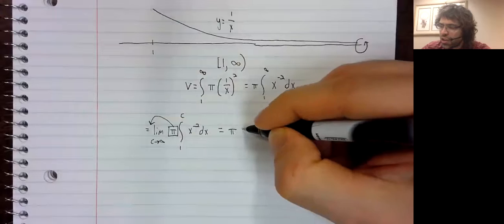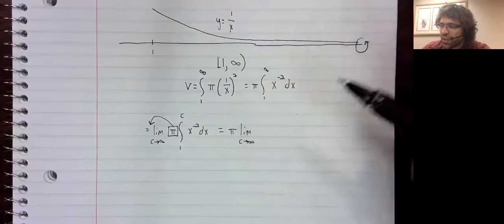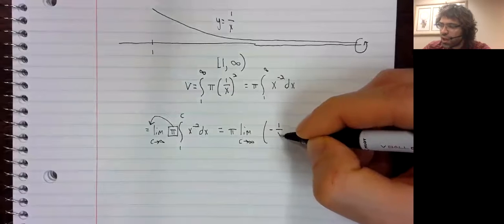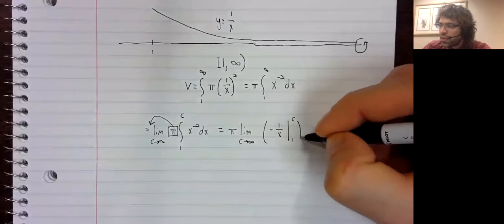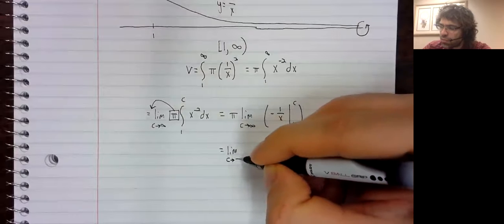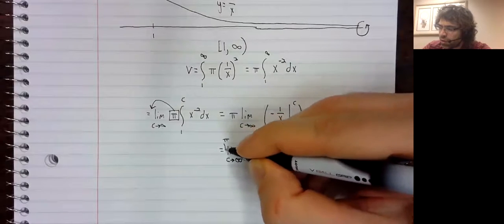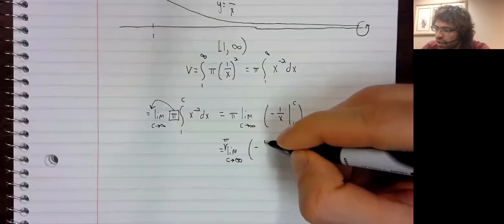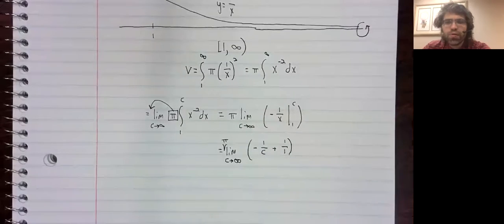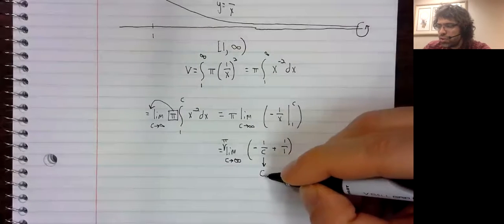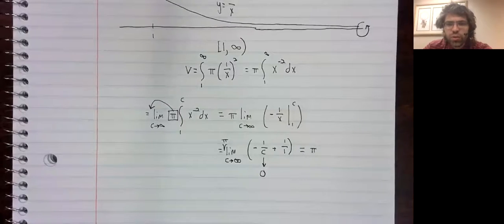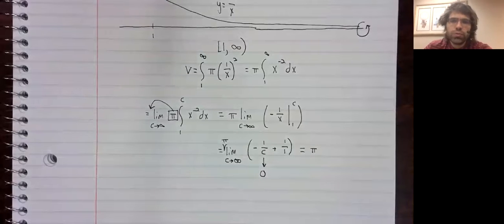And hopefully, we can take the antiderivative of this as a pretty routine exercise by now. It is negative one over x. So we have the limit as c goes to infinity, let me not forget that pi, negative one over c minus negative one over one. This goes to zero as c goes to infinity. So we get a finite volume, it's pi.